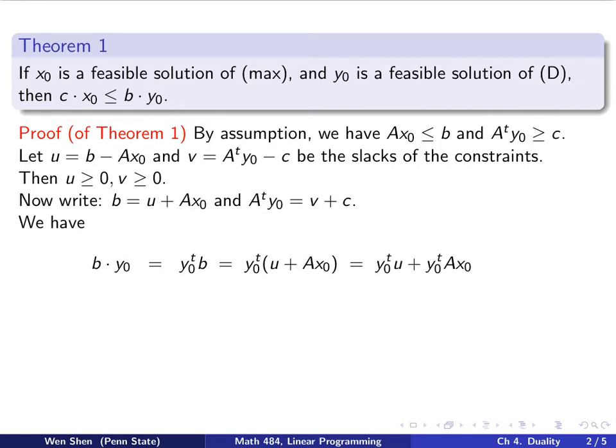Now I can distribute this y0 transpose on both terms. So I get two terms with y0 transpose on the left. This one is just y0 dot u. And then this is a vector transpose times a matrix times another vector. In the end, this becomes a scalar number. It's a number plus a number.